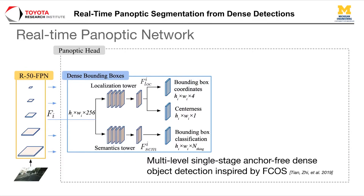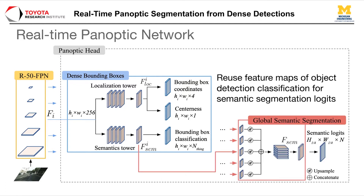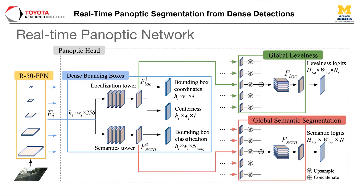To implement such an idea, we use ResNet-50 as our backbone along with a feature pyramid network to generate multi-scale feature maps. Each feature map is fed into two CNN towers to predict dense bounding box proposals. In our work, we adopt the FCOS model for bounding box parameterization. Instead of using two branches to predict object classes and semantic classes separately, we reuse the feature maps used to infer bounding box classes for semantic segmentation. Sharing computation across the two streams significantly reduces the overall complexity. We also predict a global levelness map such that multi-scale bounding box proposals can be consolidated into a single-level bounding box map for instance mask construction.